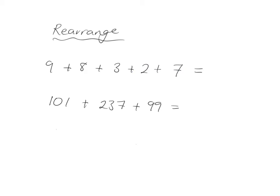Another strategy we can use is to rearrange the order in which we do things. So if we're given 9 plus 8 plus 3 plus 2 plus 7, of course we can just start from left to right and go adding 9 plus 8 plus 3 plus 2 plus 7.